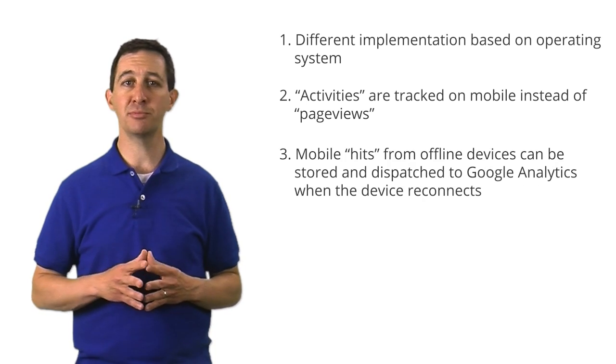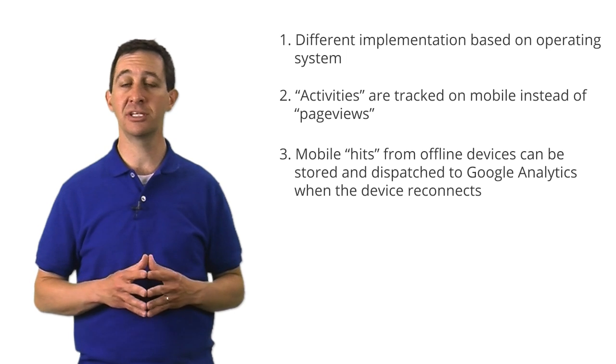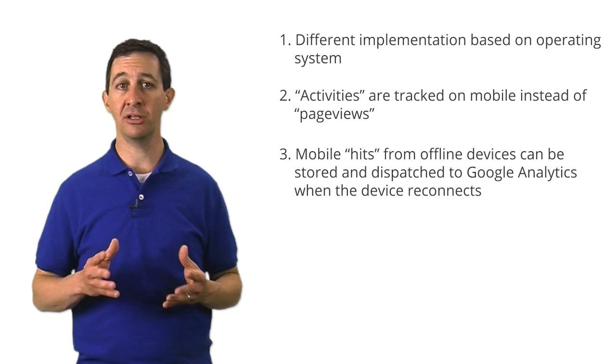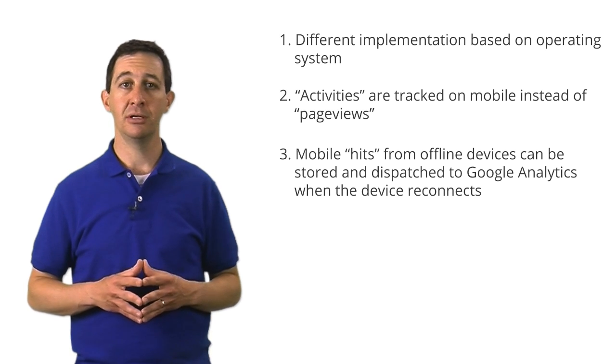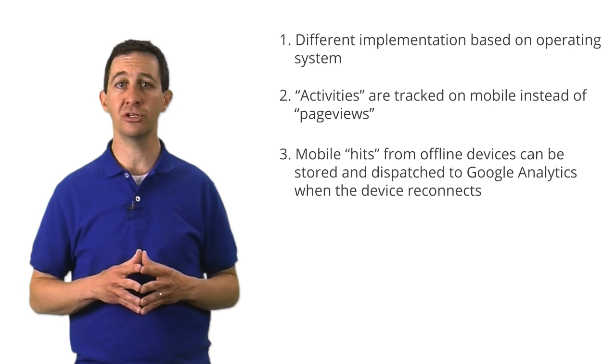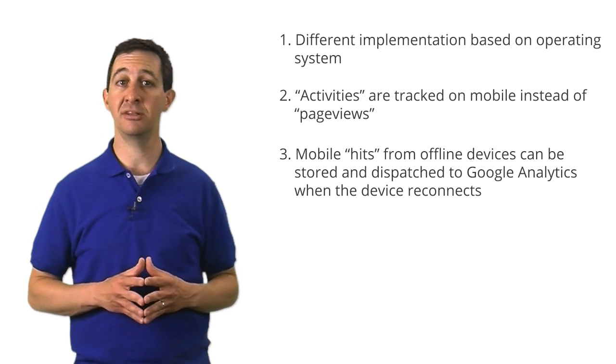One unique aspect of mobile app tracking is that mobile devices are not always connected to the Internet. As a result, data cannot always be sent to the collection servers in real time. To handle this situation, Google Analytics can store the hits and dispatch them to the servers when the device reconnects to the Internet.